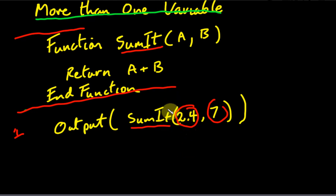What will happen now is that as we call this function, the A here will become 2.4. The B will become 7. And it will feed that data in. So that will become 2.4 and that will become a 7. And it will just return that number and replace this whole thing with 9.4. So it will output 9.4.